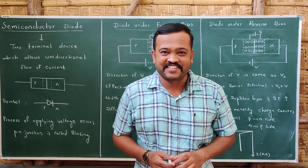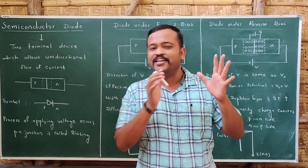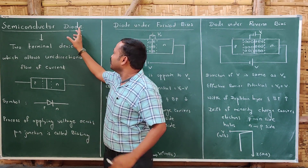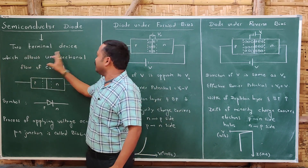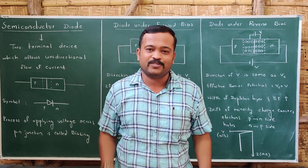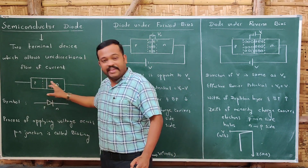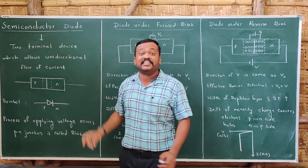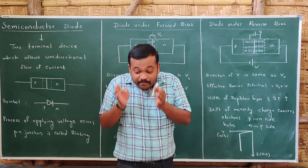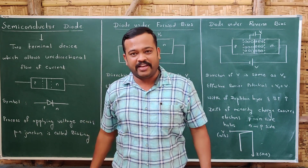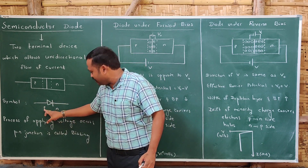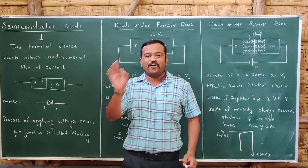Welcome to part 4 of semiconductors. In this section we will be seeing the application of PN junction, that is nothing but the semiconductor diode. Di- means 2. A semiconductor diode is a device which has two terminals and allows unidirectional flow of current. Whenever we need to send current in only one direction we will be using this diode. The symbol for the diode is an arrow marker with a line — this is the P side and this is the N side.